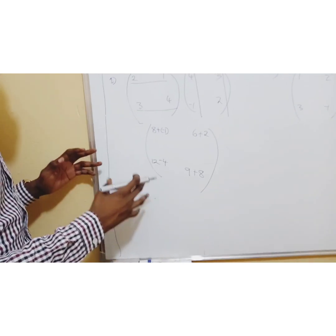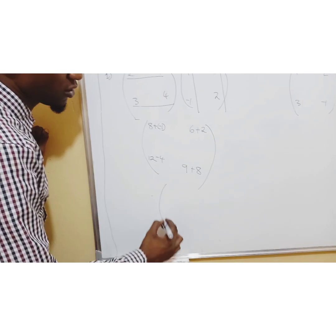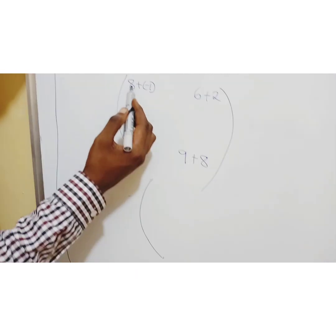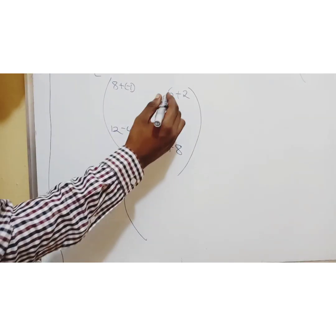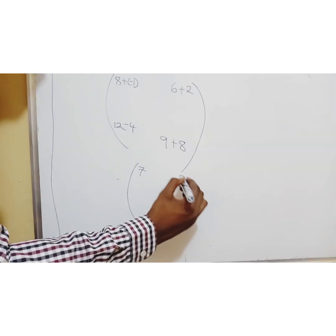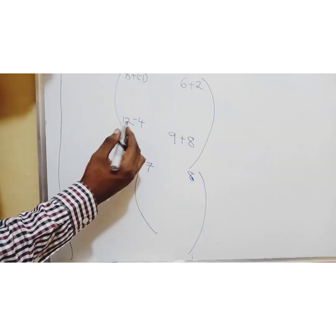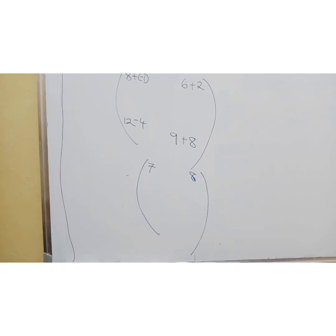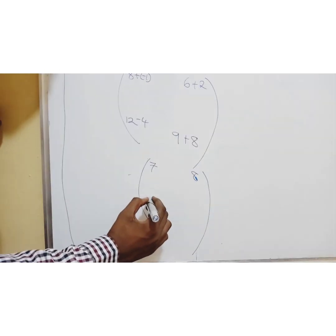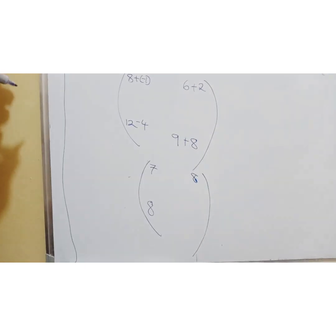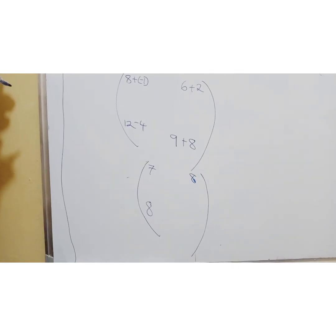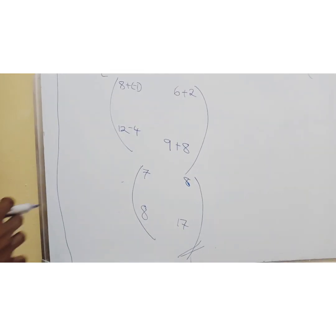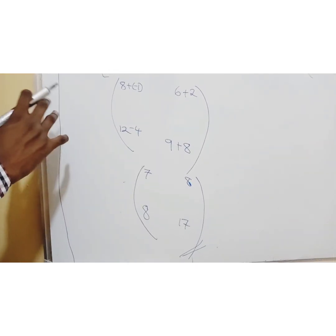I hope you are following. Now the key is just to simplify. Positive times negative is negative. So 8 minus 1 is 7, 6 plus 2 is 8, 12 minus 4 is 8, and 9 plus 8 is 17. That's as simple as that — one row multiplied by each column.